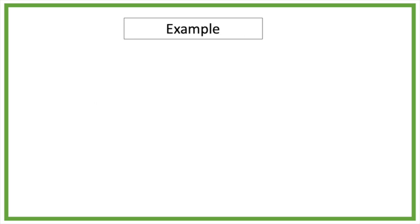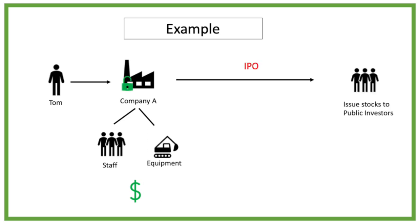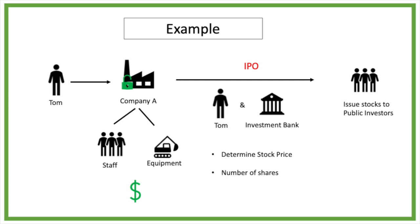Let's explain IPO with an example. Tom and some friends own a successful company A. Company A is a private company. To grow his company, Tom needs some extra money for equipment and staff. To raise extra money, Tom will issue stocks to public investors with an IPO. To issue stocks on the stock market, Tom needs help from an investment bank and together they will determine the value of the company, the stock price and number of shares willing to issue.